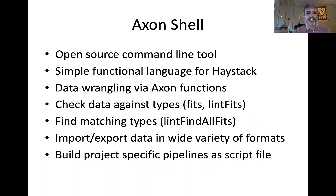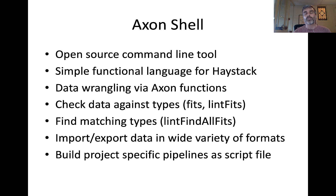We're going to do all our data wrangling as a series of Axon functions. The most important ones are fits and lint fits. Fits takes a piece of data, typically a dictionary, and checks whether it fits a particular type template — returning true or false. If you want to know why it doesn't fit, you use lint fits. Then there's lint find all fits, which lets you go through your database and find all the different types that fit your equipment, spaces, and points. Axon also has a large library for importing and exporting data in a variety of formats: CSV, JSON, zinc, etc., which you can use for your data validation workflows.